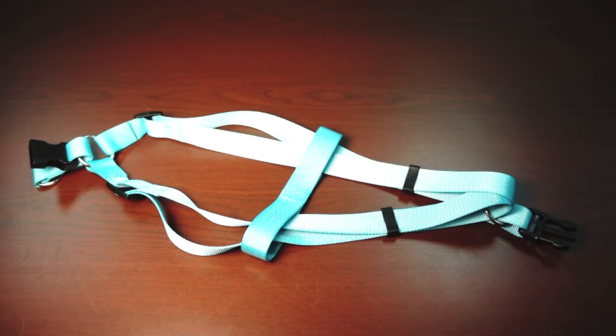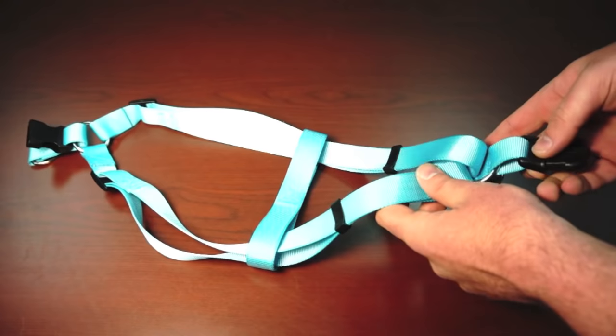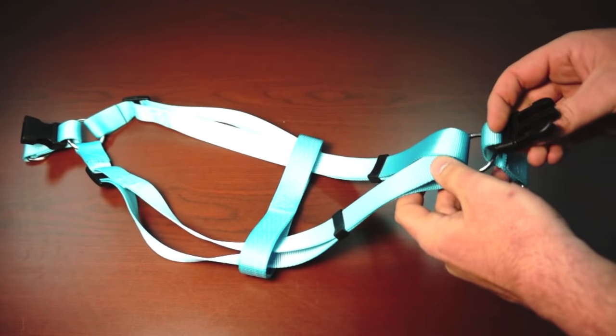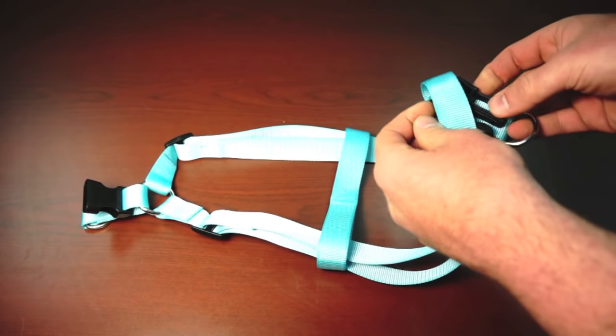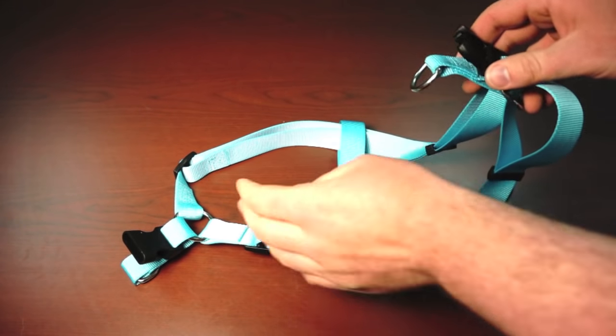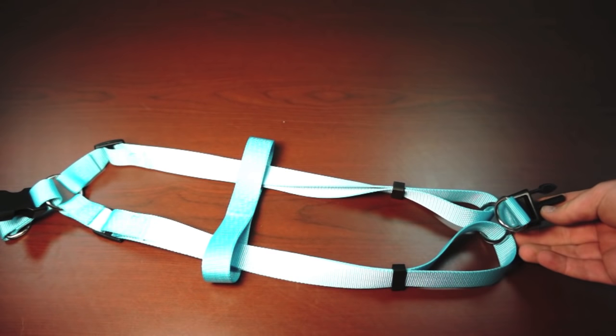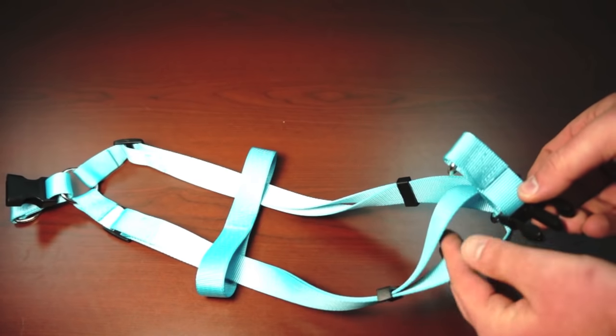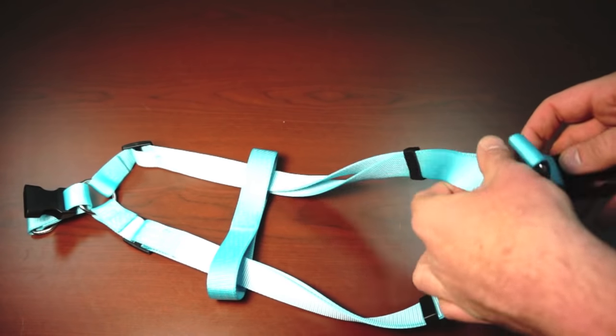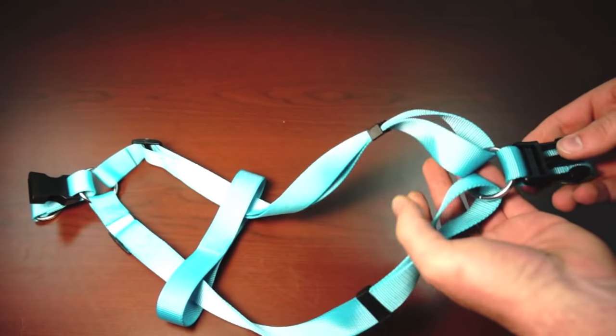The third scenario that we think might be occurring is going back to this first issue of the buckle passing through here, so that it twists. We think then that people may be attempting to correct it, but instead of passing it back through the same loop that it has been looped through, if you go through the other loop, well,